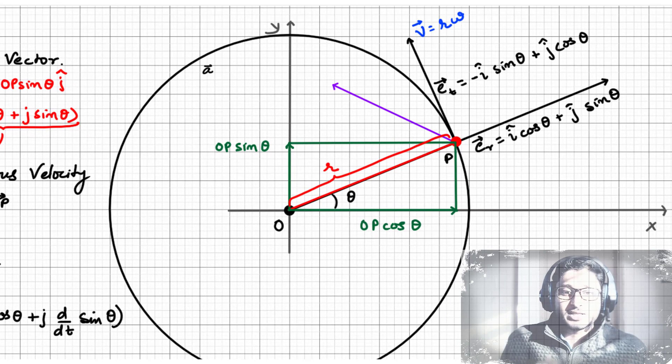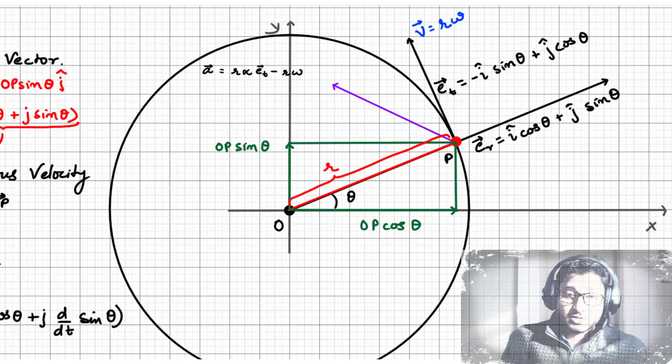But in the second part, we can replace omega r with v, since we already know that omega r is the magnitude of the tangential velocity.